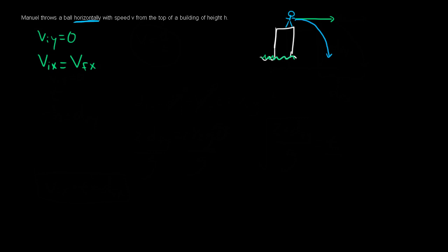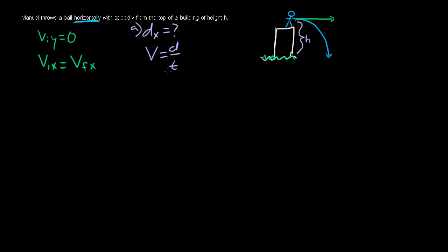For part A, we want to find the horizontal distance. Since velocity in x is constant, we can use velocity equals distance over time. The horizontal velocity v is given, so we need to find distance d. The missing piece is time — how long will the ball be flying through the air? Time is the one variable shared between the x and y directions, so let's find time using the y direction.